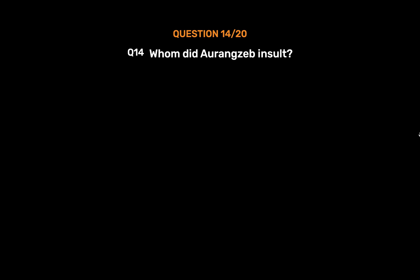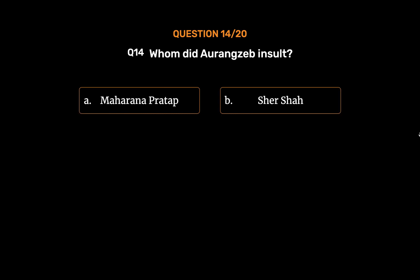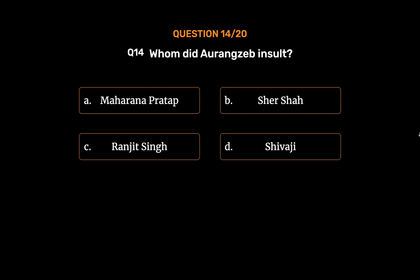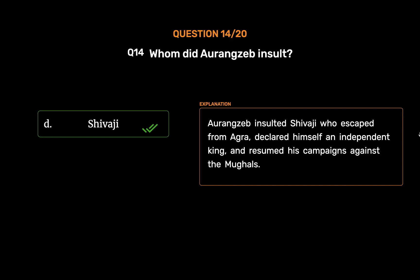Question 14: Whom did Aurangzeb insult? Option A: Maharana Pratap. Option B: Shersha. Option C: Ranjit Singh. Option D: Shivaji. The correct answer is Option D, Shivaji. Aurangzeb insulted Shivaji, who escaped from Agra, declared himself an independent king, and resumed his campaigns against the Mughals.